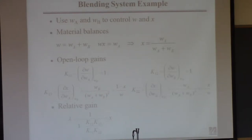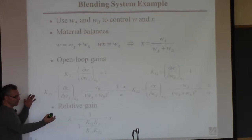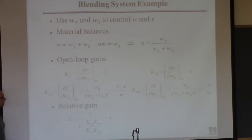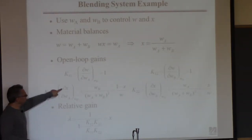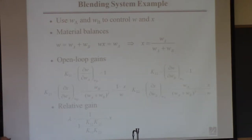Now I want to calculate what is the relative gain between X and WA, and X and WB. Then I'll have all four gains I need and I can do the RGA. This is not conceptually hard. If I want to know the gain between X and WA, I'm just going to take the derivative of this equation with respect to WA. If I do that, I'll get this. That's easy to see. What's hard to see is why that ends up equaling this.